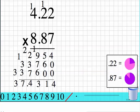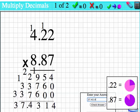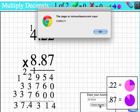Let me show you how to enter it. You're going to go up here and you're going to find this check mark. Click the check mark. And then enter the answer: 37.4314. Then click check answer. I'm correct.